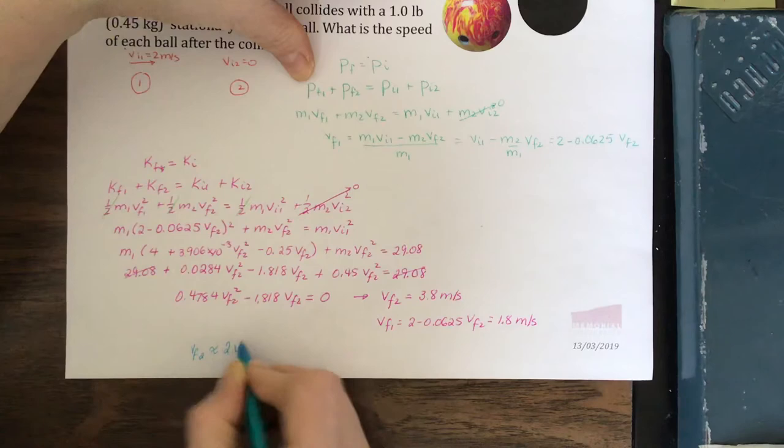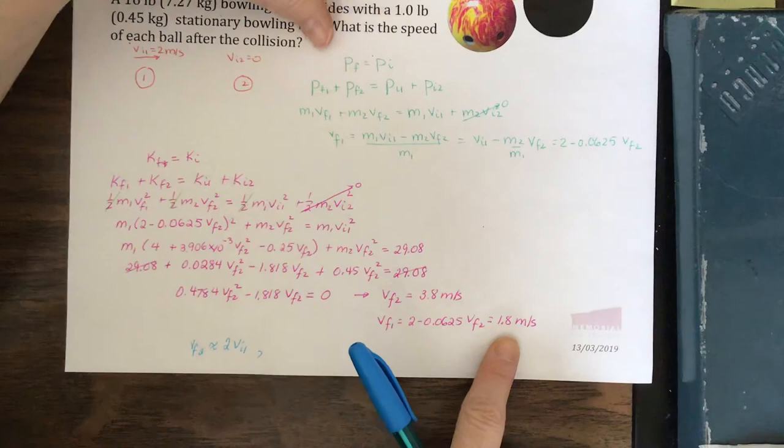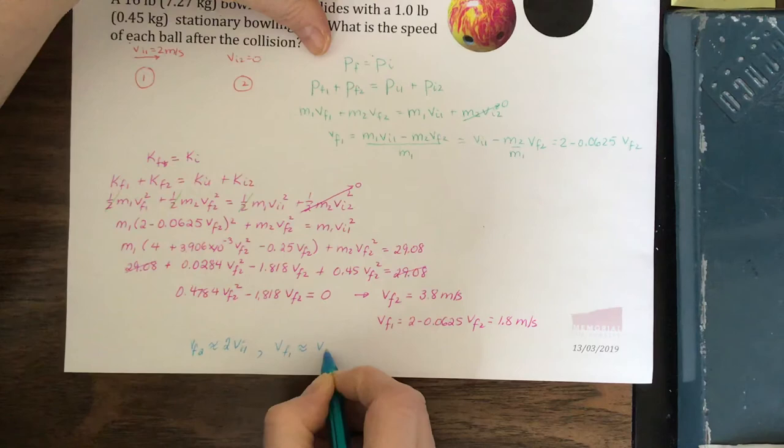And the other thing that happens, vF1 is 1.8, vInitial 1 is 2 meters per second. vF1 didn't change very much at all. So vF1 is about equal to vInitial 1.